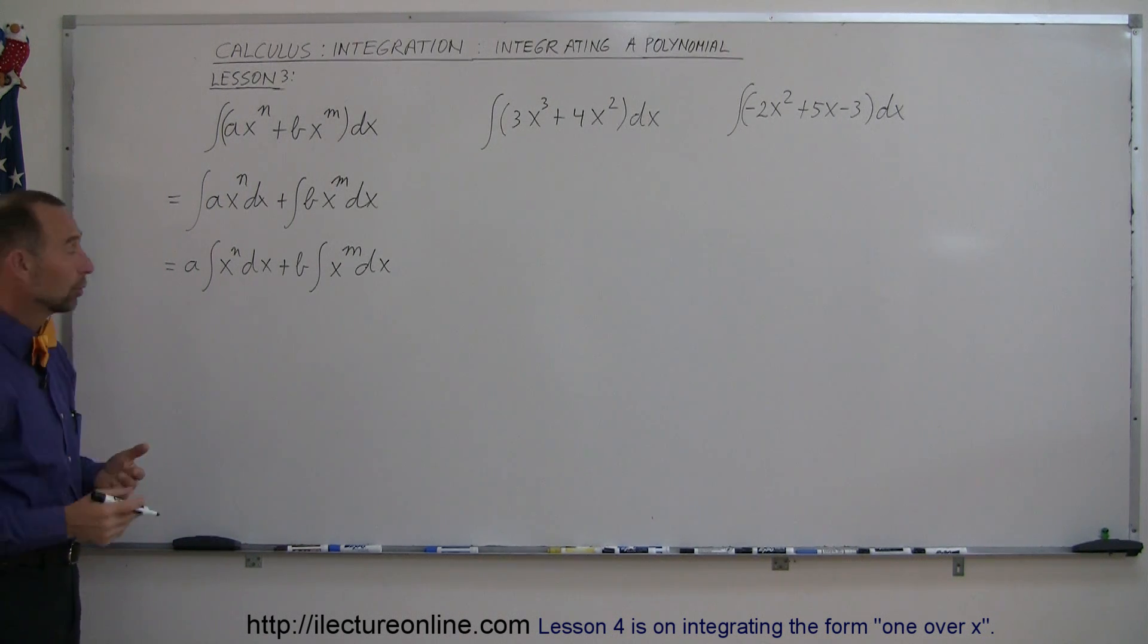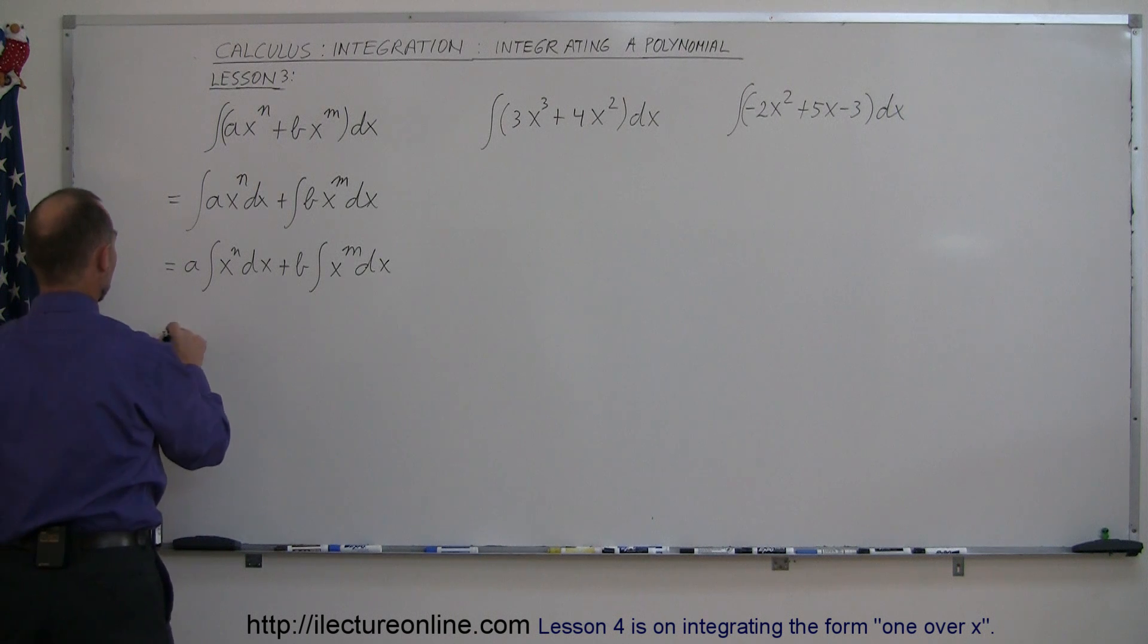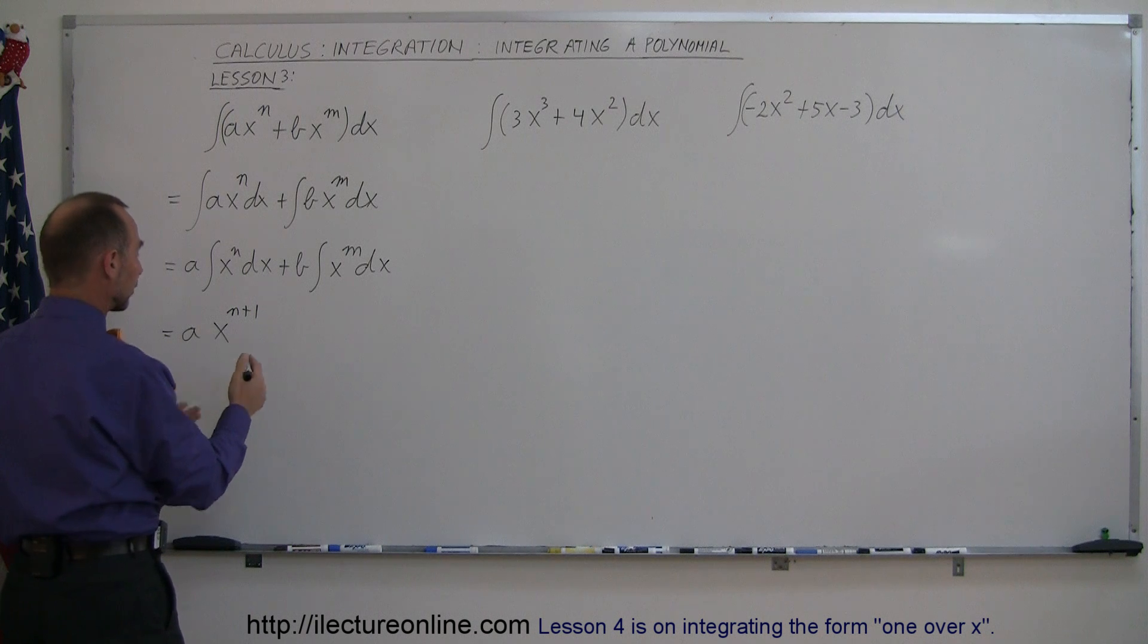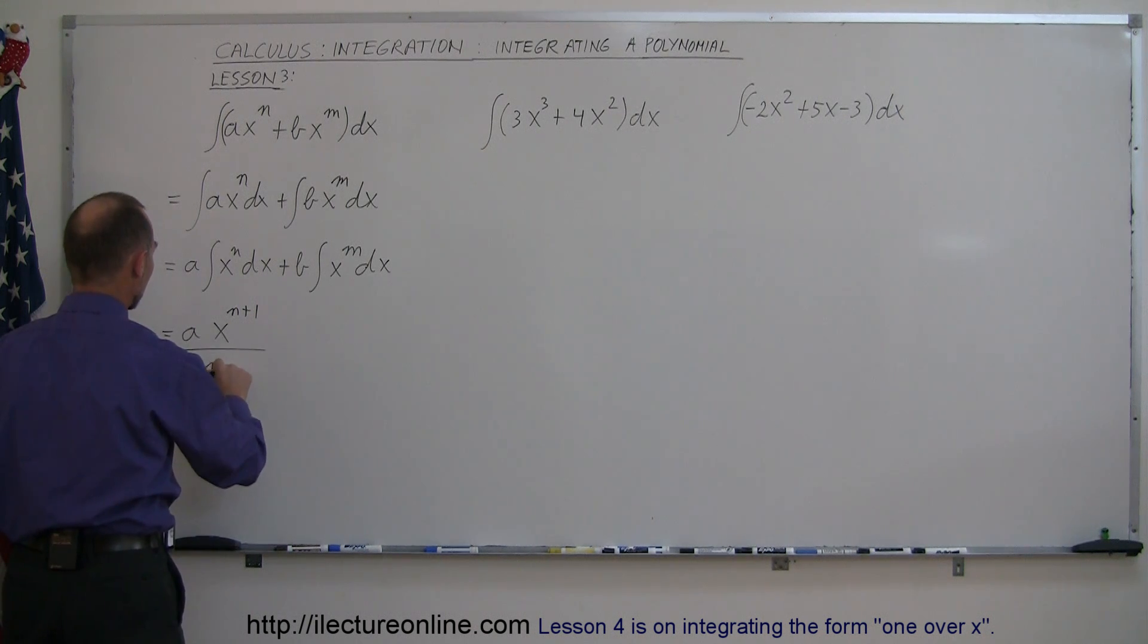Now we can apply the rule that we learned before. This is equal to a times x to the n plus 1. We add one to the exponent, divide by the new exponent, n plus 1.